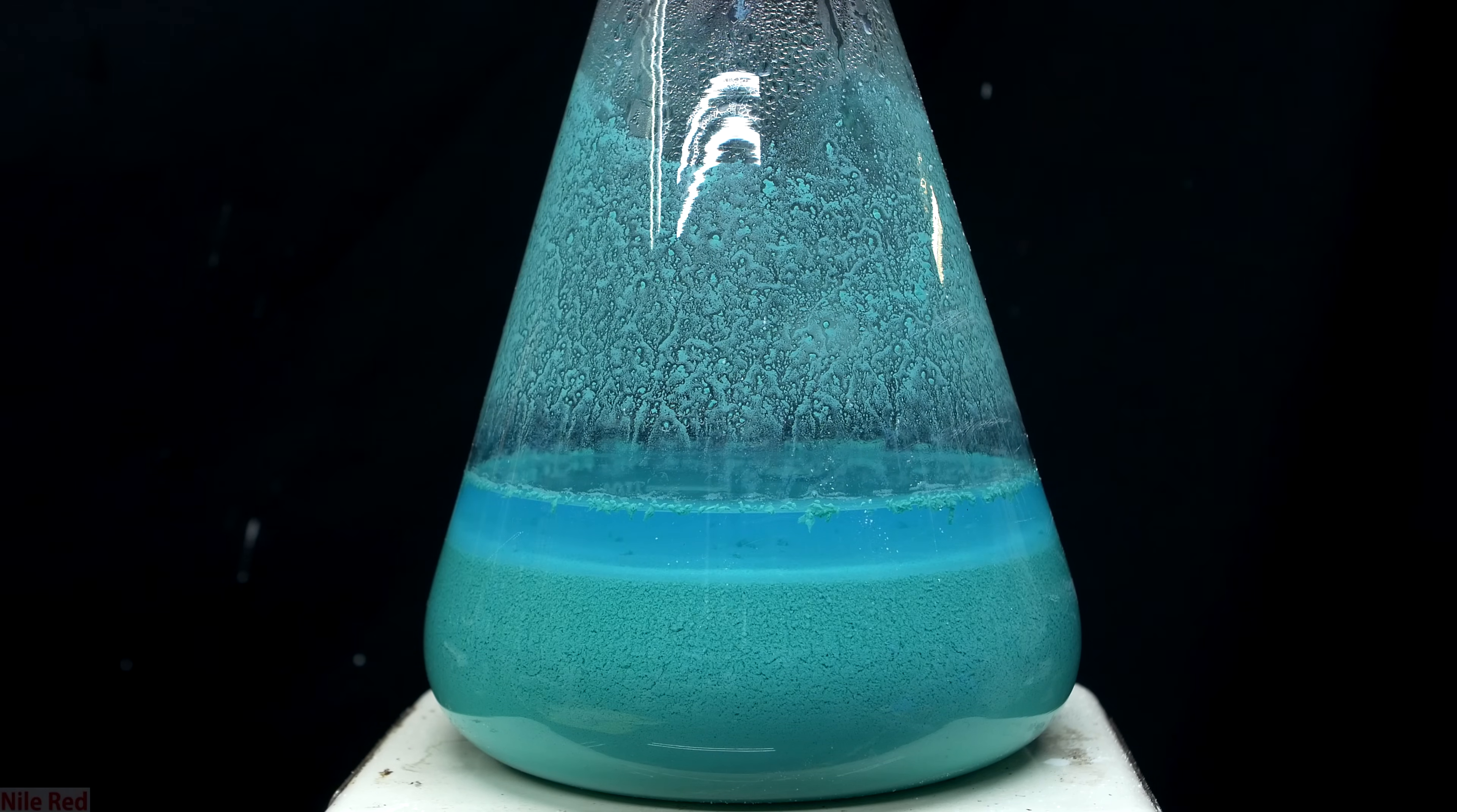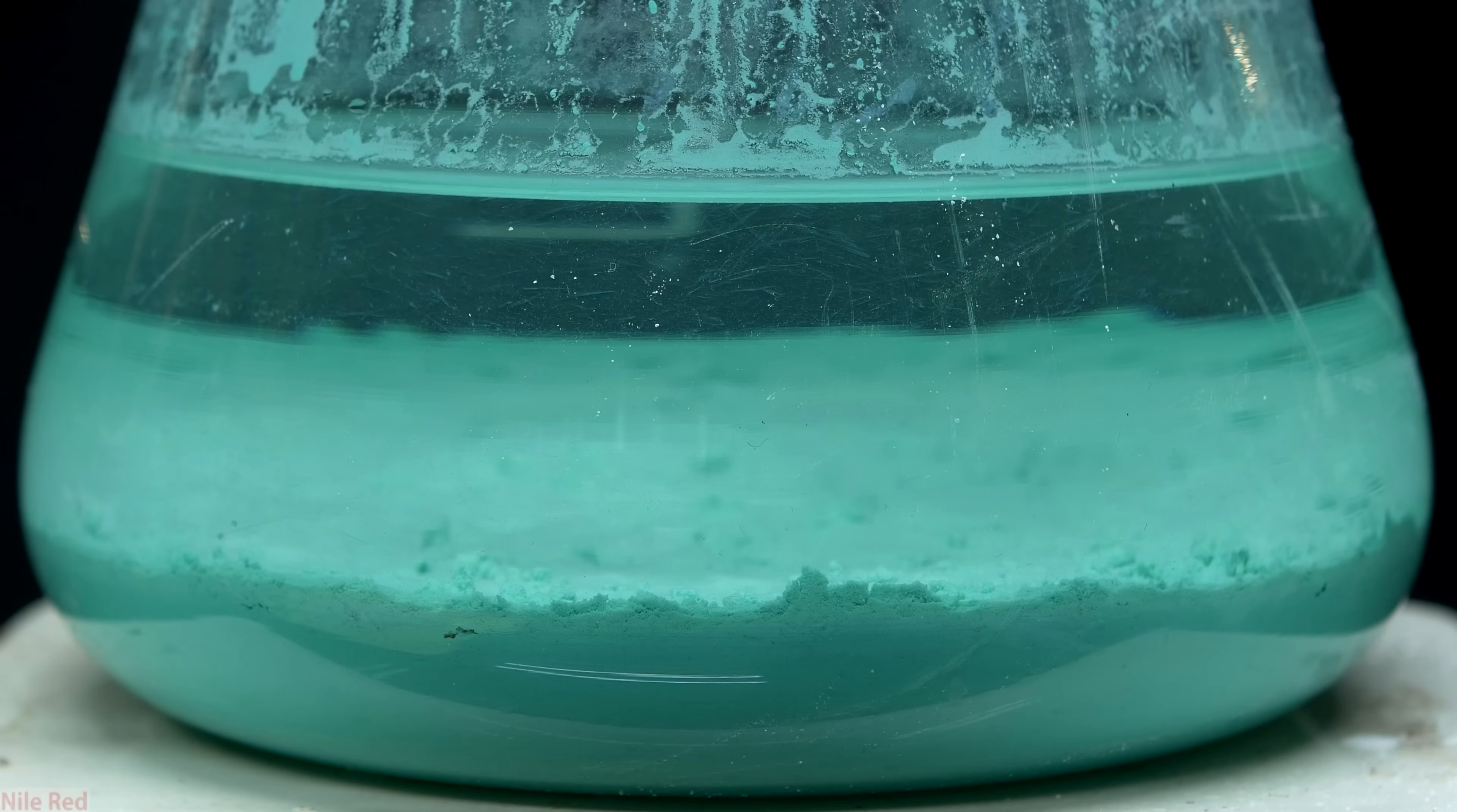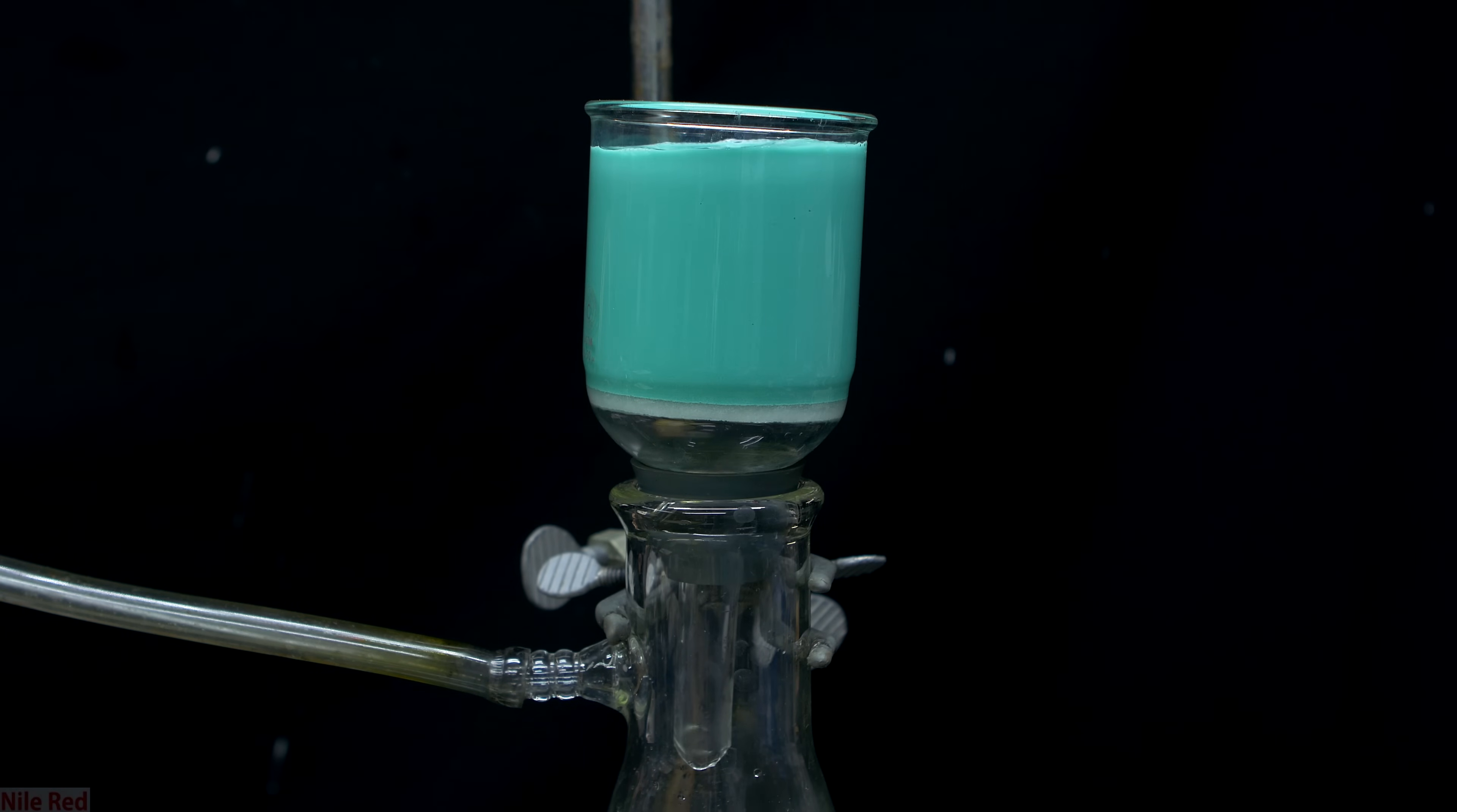One thing to point out is if you actually look at the water here, it's still a little bit blue, which means that there's some copper sulfate left over. When we come back to the reaction a few hours later, you can see that the water is colorless now, which means that all of the copper sulfate has been used. Now we're ready to move on, and to separate the basic copper carbonate, we carry out a vacuum filtration.